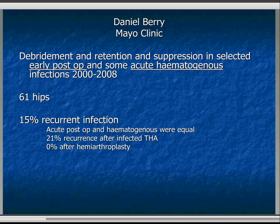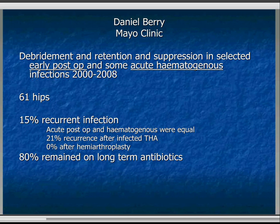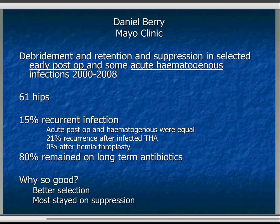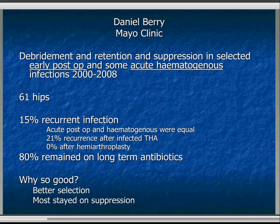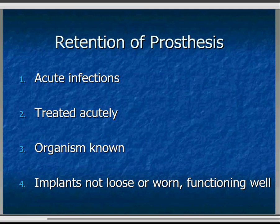Dan Berry at the Hip Society this year looked at the Mayo Clinic experience with debridement, retention of implants, and antibiotic suppression in a very specific group — early post-op and acute haematogenous infections over an eight-year period. They had 61 hips, with a 15% recurrent infection rate. They found that both acute post-op and later-presenting haematogenous acute infections had equal recurrence rates, and there was a 0% recurrence rate after hemiarthroplasty. These were patients who had acute infections after their initial hemiarthroplasty for fracture.